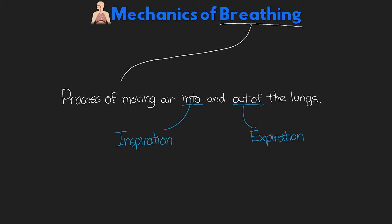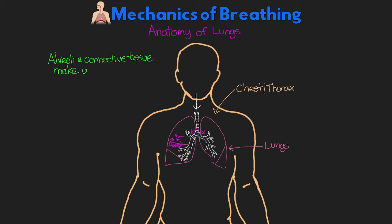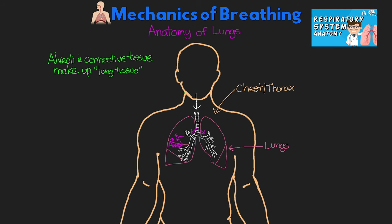To start off, we need to review some anatomy and physiology. Here we have our patient and their chest, or their thorax, and this is where the lungs are located. We have the patient's airway, which comes down the trachea, then branches into our left and right main bronchus, which continues to further divide into bronchi, bronchioles, and ultimately into our alveolar sacs and alveoli. These alveoli and connective tissue make up the majority of our lung tissue. This connective tissue helps the lungs keep their shape, and there is a natural elastic pressure — so if the lung expands, this elastic recoil wants to pull the lung tissue back in.